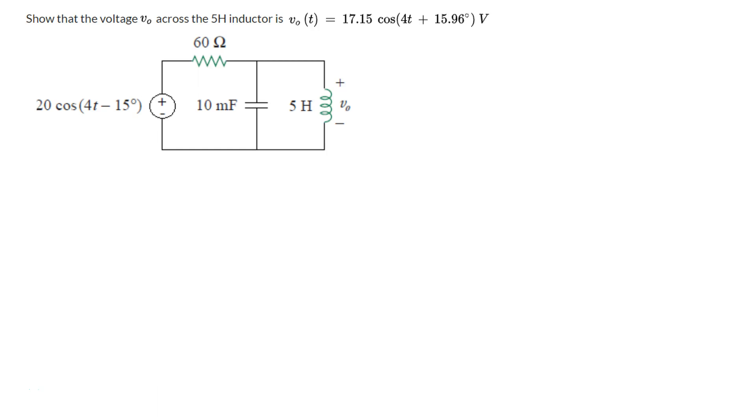So that our algebra is a lot more simplified. Instead of doing trig identities, we'll be working with complex numbers in that case. So 20 cosine 4t minus 15 degrees in phasor domain can be written as basically 20 angle minus 15 degrees volts for omega equals 4 radians per second.